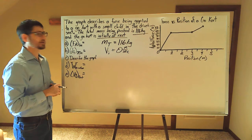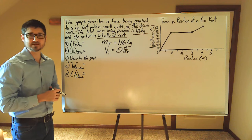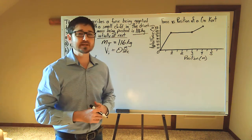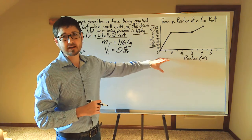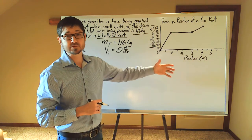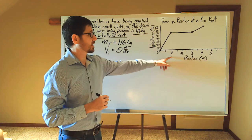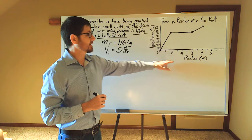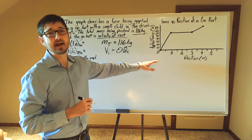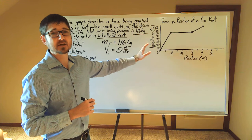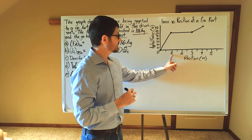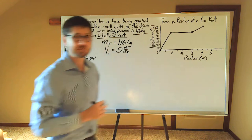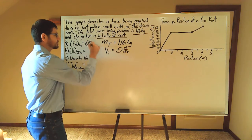In part A, it wants us to look at the graph and identify the force applied at a position of one meter. In chapter 10 we're going to be drawing, reading, and describing a lot of graphs. We have a force versus position graph — position in meters on the x-axis and applied force in newtons on the y-axis. At a position of one meter, going straight up parallel to the y-axis, we have an applied force of 60 newtons.